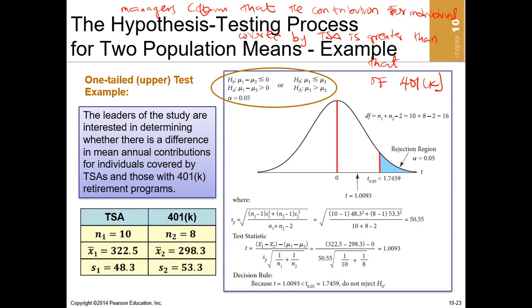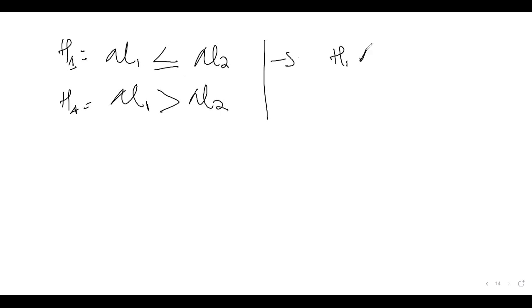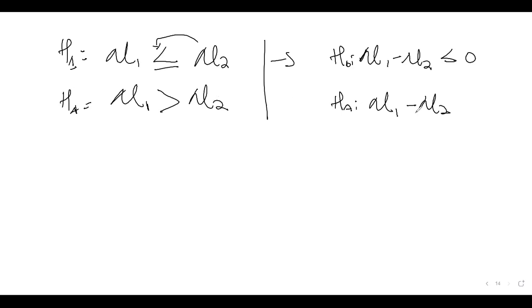Let's assume TSA to be group one and 401k to be group two. The claim is that group one is greater than group two. That means the null hypothesis will be the opposite: group one is less than or equal to group two, which we write as group one minus group two is less than or equal to zero. The alternative is group one minus group two is greater than zero.